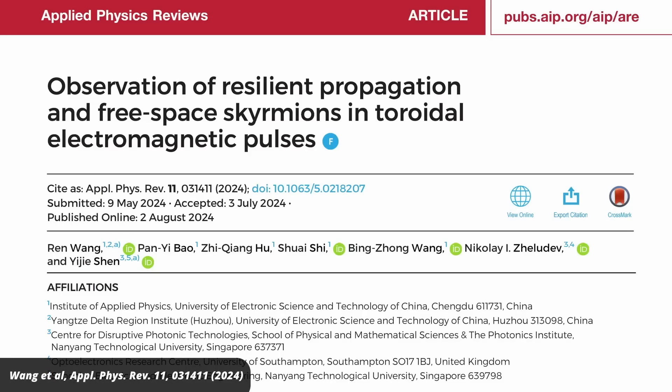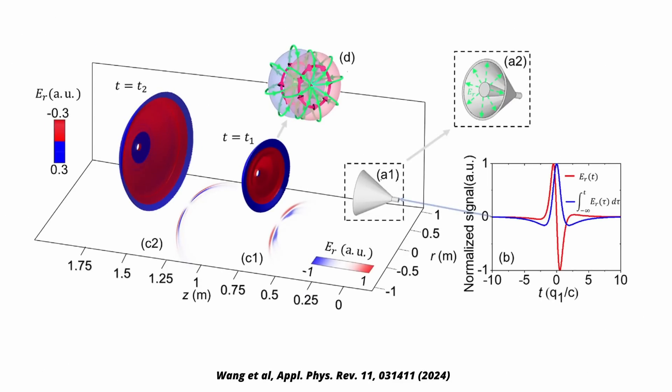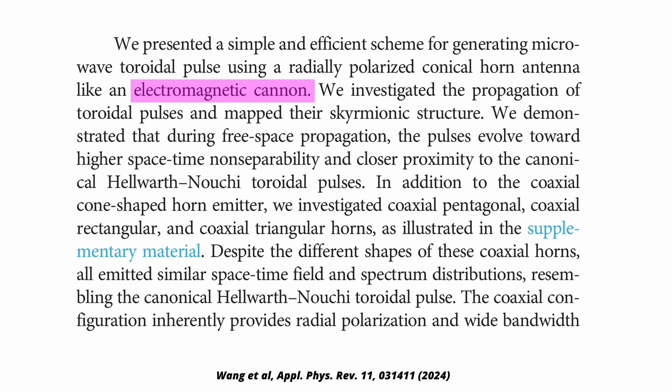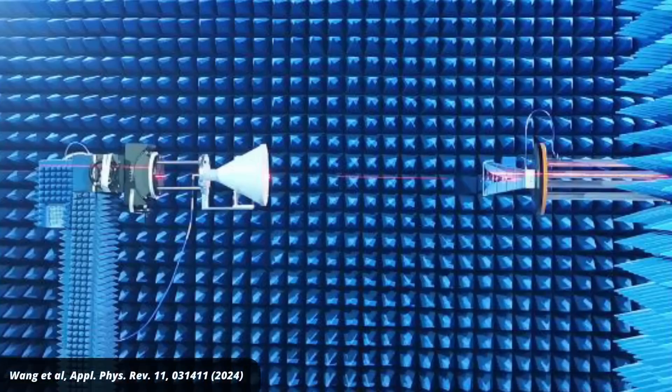The authors of the new paper did it by designing a special antenna that has the shape of a cone. They call it an electromagnetic cannon, though if you prefer the technical description, it's a radially polarized conical horn antenna. And it isn't a microscopic device. It has a radius of about 25 centimeters, so it's about the size of a pizza, except if you live in the United States, where pizzas are about 10 times larger.